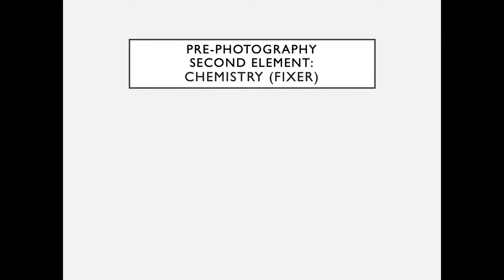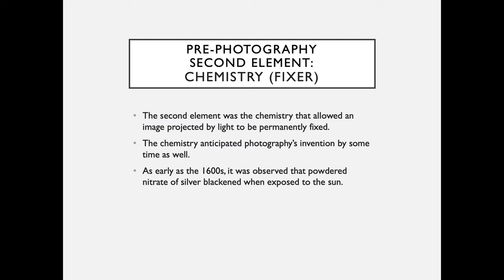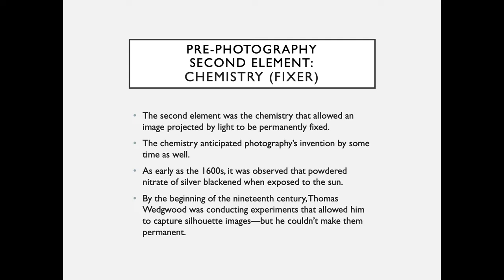The second element needed for photography is chemistry, or fixer. The second element was the chemistry that allowed an image projected by light to be permanently fixed. The chemistry anticipated photography's invention by some time: as early as the 1600s, it was observed that powdered nitrate of silver blackened when exposed to the sun. By the beginning of the 19th century, Thomas Wedgwood was conducting experiments that allowed him to capture silhouette images, but he couldn't make them permanent. Eventually, Daguerre and Talbot found chemicals to fix photographic images.